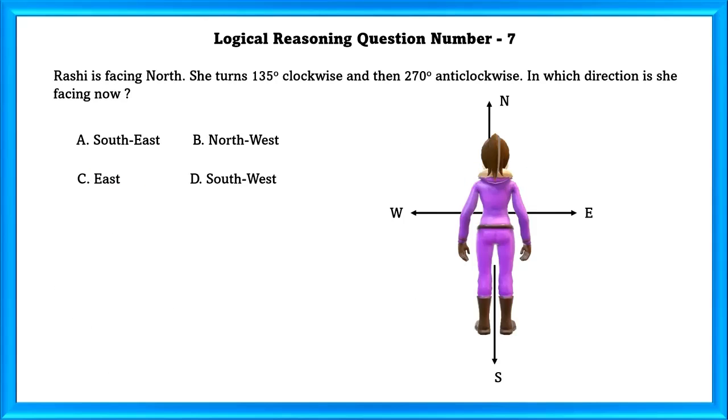Logical Reasoning Question Number 7. Rashi is facing North. She turns 135 degree clockwise and 270 degree anticlockwise. In which direction is she facing now?